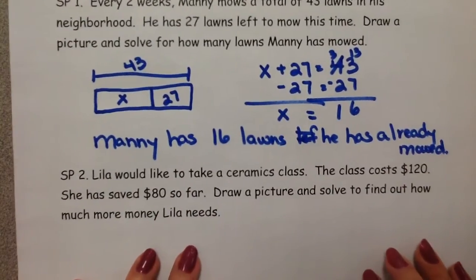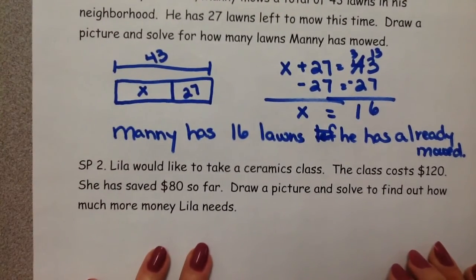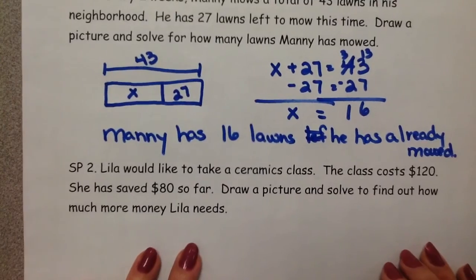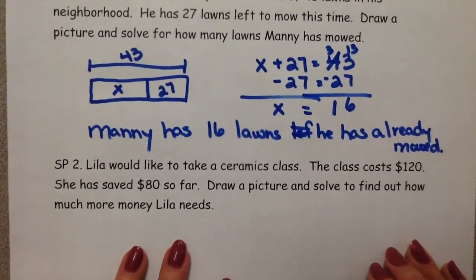Story problem number two. Lila would like to take a ceramics class. The class costs $120. She has saved $80 so far. Draw a picture to solve to find out how much more money Lila needs.